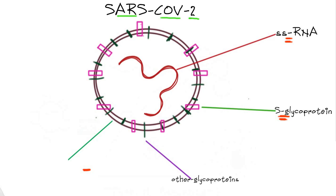The second route by which coronavirus spreads is the feco-oral route. In this route, the infected person expels the virus in their fecal matter, and if that fecal matter comes into contact with a healthy person, the virus can gain entry into that person's system and cause infection.